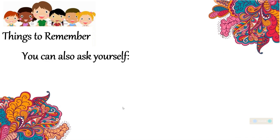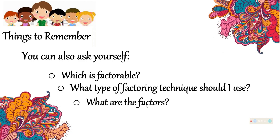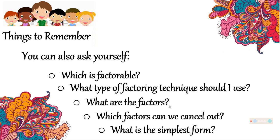You can also ask yourself: which is factorable — the numerator, the denominator, or both? What type of factoring technique should I use? That is why you have to master the different kinds of factoring techniques. And what are the factors? If you have mastered the different factoring techniques, it is very easy to give the factors of the given polynomials. Finally, which factors can we cancel out? Remember, only factors are cancelled, not terms. After that, you may give the simplest form.